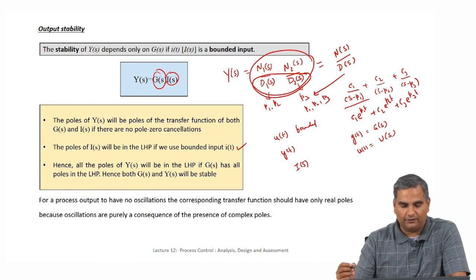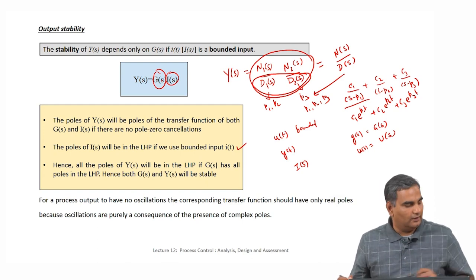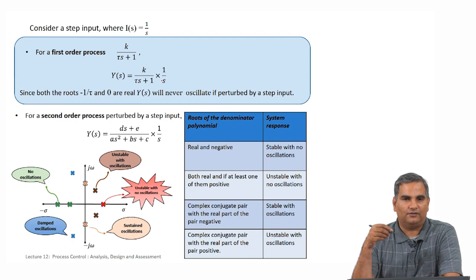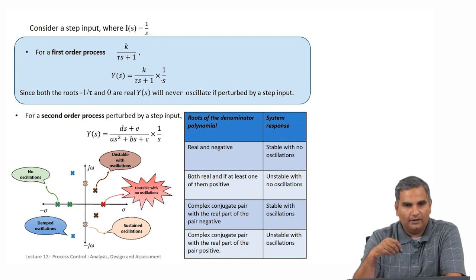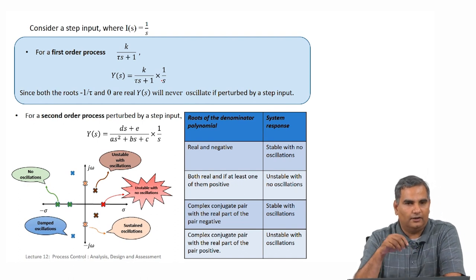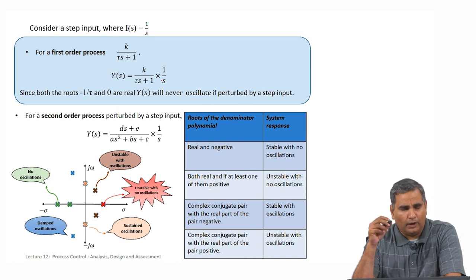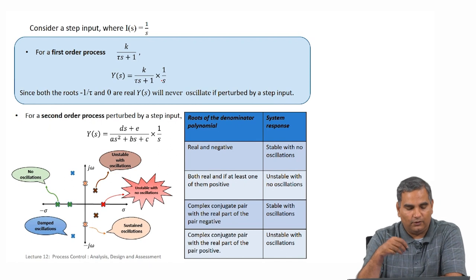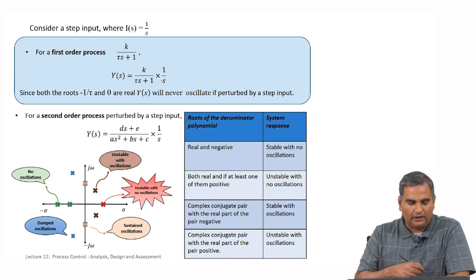BIBO stability means: given a bounded input U(t), when is Y(t) bounded? If U(S) has all its poles in the left half plane we call the input bounded. Given such a bounded input, Y(t) will be bounded if all the poles of G(S) are also in the left half plane. I have left aside the case where poles lie exactly on the imaginary axis — that introduces some interesting ideas and we will get back to that.